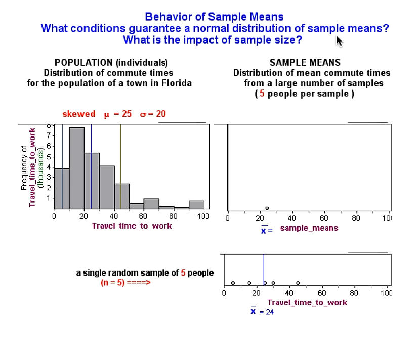From our previous investigations, we know that when a variable is normally distributed in the population, sample means will also be normally distributed. So for this investigation, we will look at a population with a skew. Here we have the commute times for individuals living in a small town in Florida. This data comes from the 2000 U.S. Census. We can see that commute times are skewed to the right, with a mean of 25 minutes and a standard deviation of 20 minutes. In the graph, I have marked the mean and a standard deviation below and above the mean. I will do this in all the distributions in this movie to give us a quick visual representation of the center and spread, but my dialogue is going to focus on the shape.